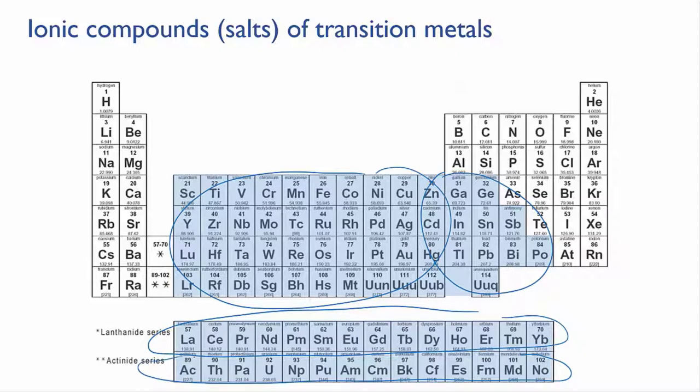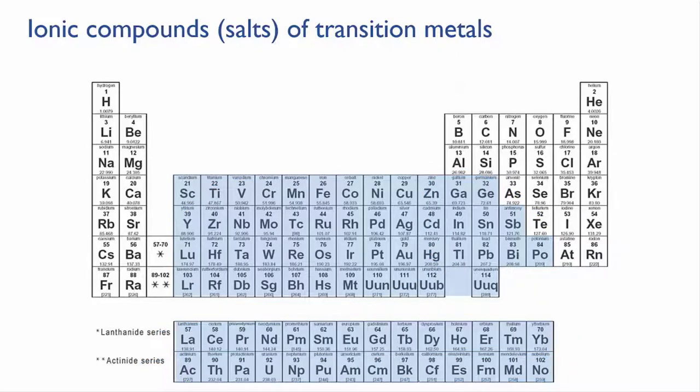Until now, it's been assumed that given a name or a formula, you would be able to work out the charges on the ions involved by just looking up where they are on the periodic table. However, most of the transition metals and post-transition metals are not so predictable. They can form ions with different charges.